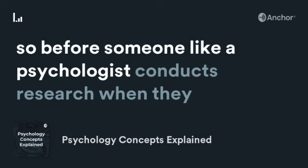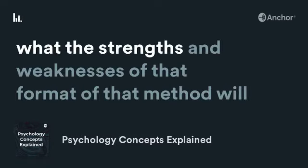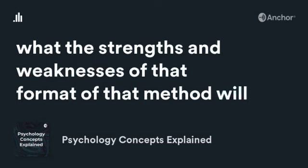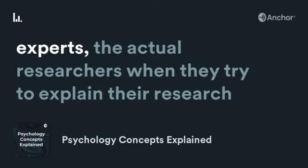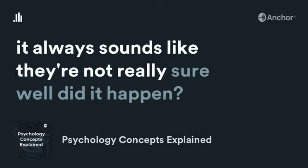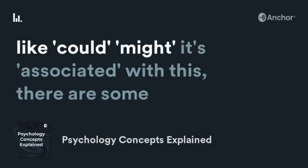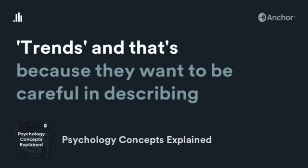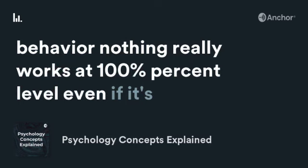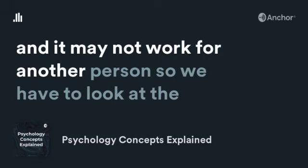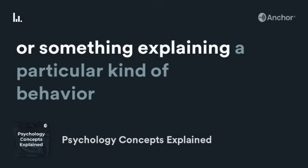Before a psychologist conducts research and chooses a method like a telephone survey, they already know ahead of time what the strengths and weaknesses of that method will be, so that when they write their conclusions, they're very cautious. When you listen to health, medical, or psychological experts — the actual researchers explaining their research — it always sounds like they're not really sure. They use a lot of words like 'could,' 'might,' 'it's associated with this,' 'there are some trends.' That's because they want to be careful in describing exactly what the data is showing, because when studying human behavior, nothing really works at 100%, even medications. Taking an antibiotic can affect one person and may not work for another. So we have to look at numbers, trends, and probabilities.